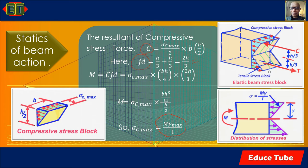Since each force acts at h/3 from the neutral axis, the lever arm jd equals h/3 plus h/3 equals 2h/3. Substituting the values of C and jd into the equation M equals C·jd, and simplifying, we arrive at the bending stress equation sigma_c equals M·y divided by I.